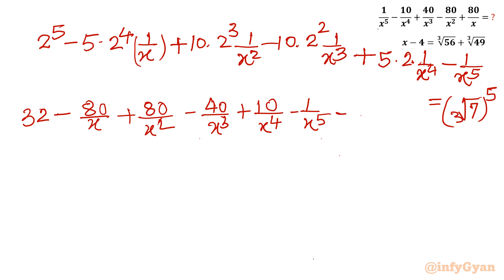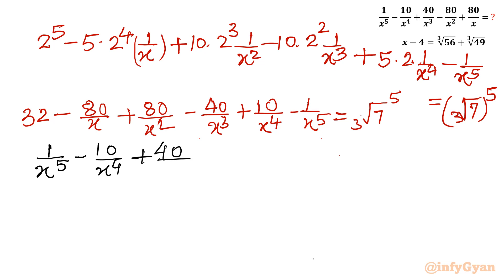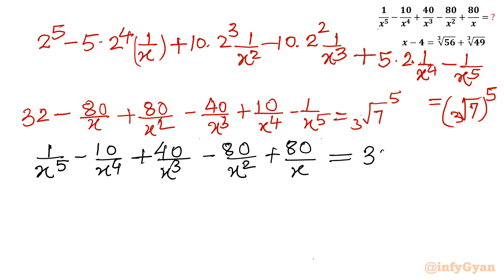Rearranging terms, taking all x-variable terms to the right hand side and multiplying through by minus 1, we get: 1 over x power 5 minus 10 over x square plus 80 over x. The left hand side becomes 32 minus cube root of 7 whole power 5. This matches our required expression.